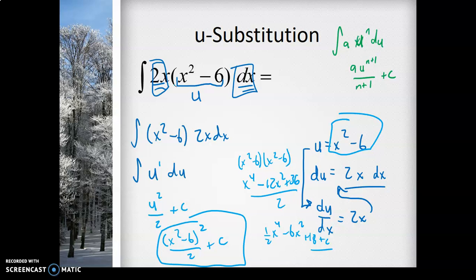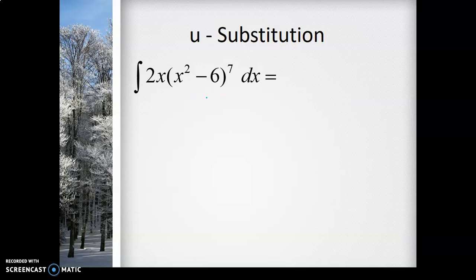For this simple problem I wouldn't recommend U-substitution — just multiply it out. But for a very similar problem like the integral of 2x(x² - 6)⁷, U-substitution becomes much more practical. In theory you could expand (x² - 6) seven times and then multiply by 2x, giving maybe 8 or 9 terms to integrate, but you'd run out of time on the AP exam. So use U-substitution.